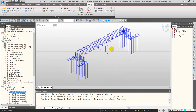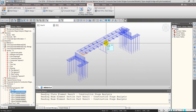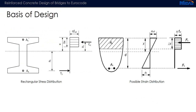That covers how these reinforced concrete components are modeled within the software. Now moving on to the basis of design: the design uses a strain compatibility approach where a rectangular stress-strain block of concrete is assumed, along with the corresponding strain distribution diagram.